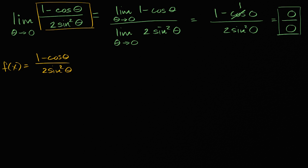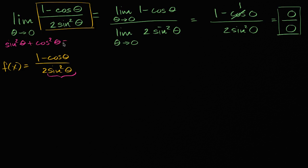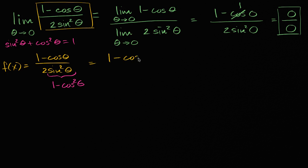The one that jumps out at me is that we have sine squared of theta. From the Pythagorean identity in trigonometry — which comes straight out of the unit circle definition of sine and cosine — we know that sine squared theta plus cosine squared theta equals one, or equivalently, sine squared theta equals one minus cosine squared theta. So we can rewrite this as one minus cosine theta over two times one minus cosine squared theta.